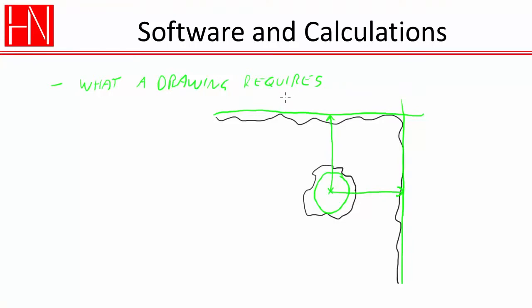But that's usually not what measuring equipment, for example a coordinate measuring machine, does. A coordinate measuring machine tends to put in an average line here, an average line over here, an average line over here, and an average circle through this hole.